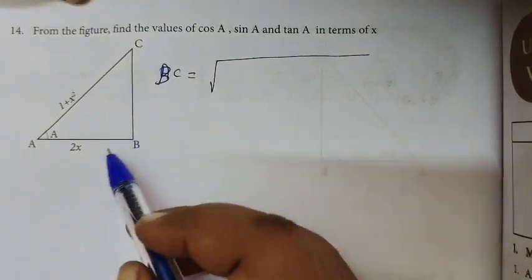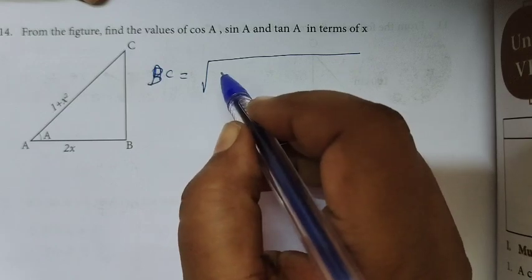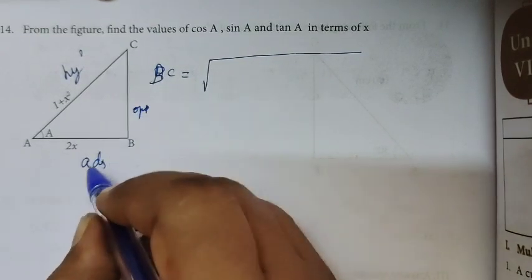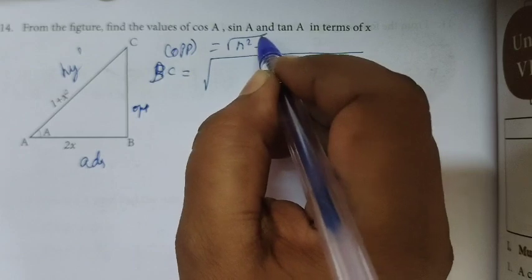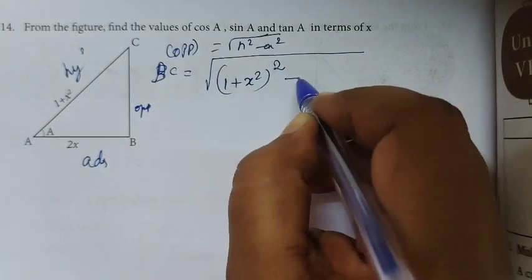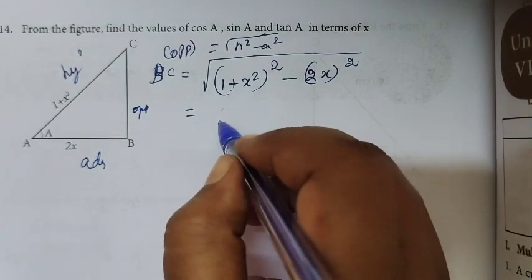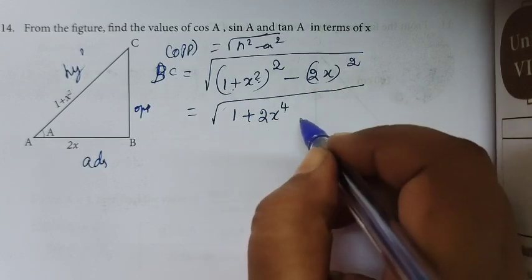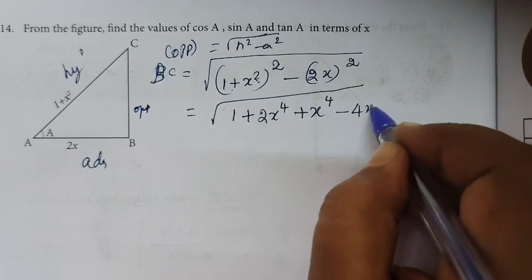Question number 14: you are given AB value and AC value, find the BC value. We are using the Pythagorean theorem. The hypotenuse is 1 plus x², the adjacent is 2x, and we need to find the opposite side BC. The formula is root of hypotenuse squared minus adjacent side squared.